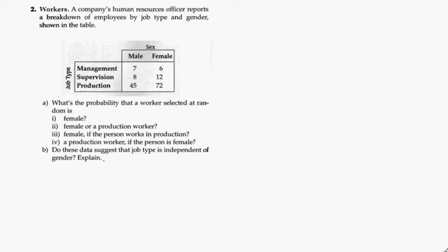This is problem 2 from the unit 4 review. It's about workers. I'm just going to dive in because there's a chance this video could be a long video. We've given this information. We basically have two variables: gender and then the type of job in the company, either management, supervisor, or production.